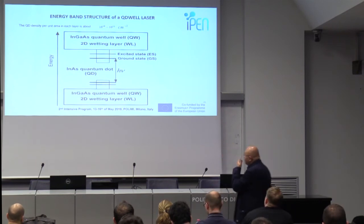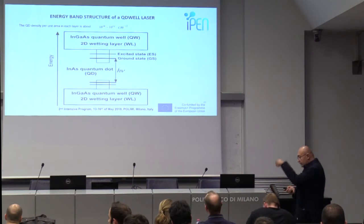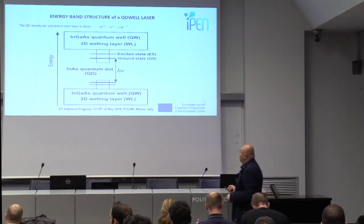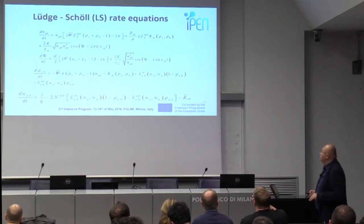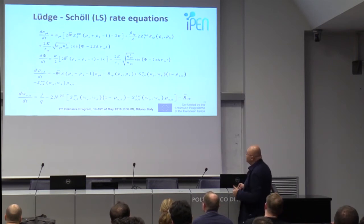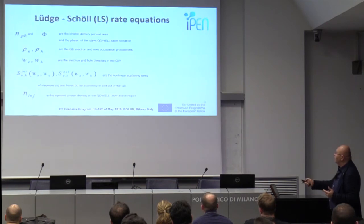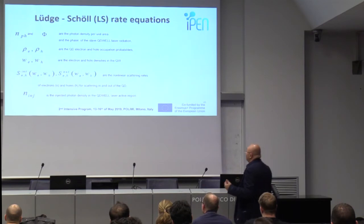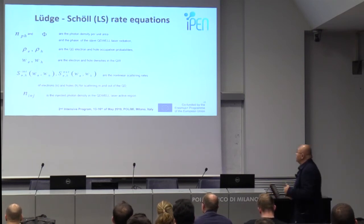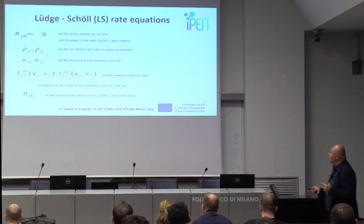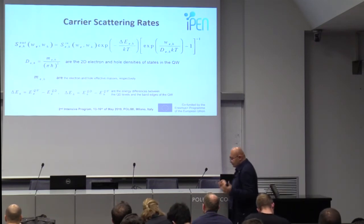There is another quantum dot laser structure — the quantum dot in well (DWELL) laser, where the quantum dot is placed in a strained quantum well. In this case the rate equations are very complex: ρE and ρH are the quantum electron and hole occupation probabilities in the quantum dots, V and VH are the electron and hole densities in the quantum well, and you also have nonlinear scattering rates. Due to the nonlinearities, the laser can even exhibit chaotic behavior.